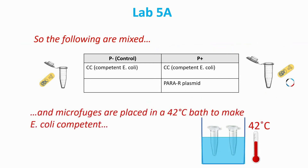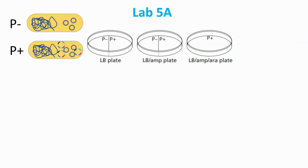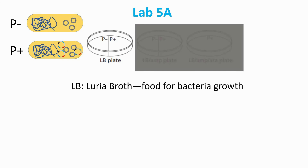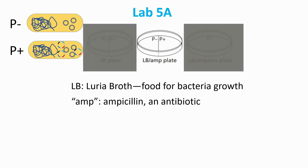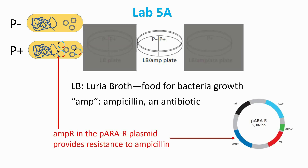You'll use your samples with three dishes in Lab 5A. The mission is to predict what will happen and make observations regarding the three dishes. The first contains luria broth, which is food for the E. coli and aids their production. The second dish contains luria broth and ampicillin. Ampicillin is an antibiotic that kills E. coli bacteria that don't have antibiotic resistance. The AMPAR gene in the PARA-R plasmid provides this resistance, and because it marks the bacteria as having the plasmid, AMPAR is known as a marker.